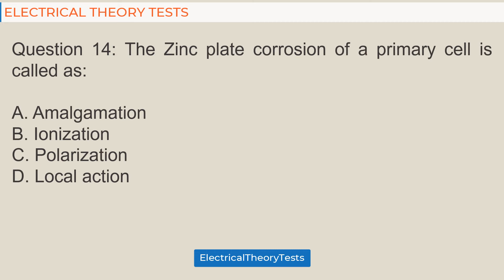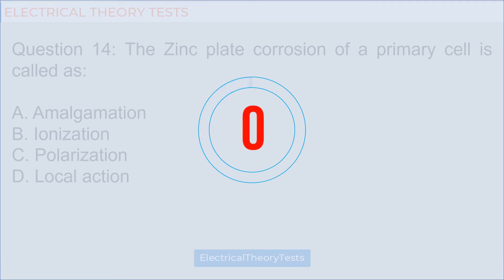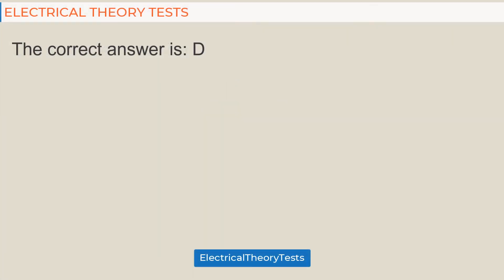Question 14: The zinc plate corrosion of a primary cell is called — a) amalgamation, b) ionization, c) polarization, d) local action. The correct answer is d) local action.